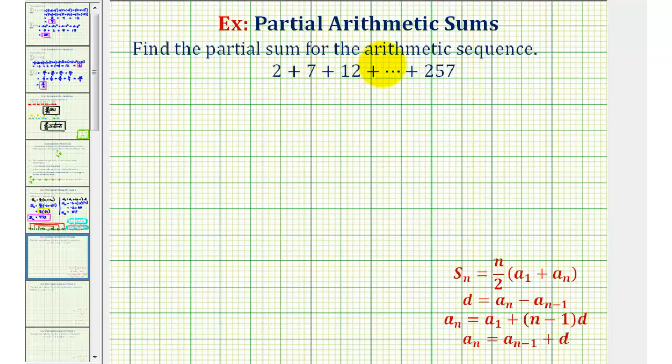We want to find the partial sum for the arithmetic sequence, and since we're summing a sequence, we can also call this a series. And since we're told this is an arithmetic sequence, we can find this partial sum using this formula here: S_n equals n divided by two times the quantity a sub one plus a sub n.